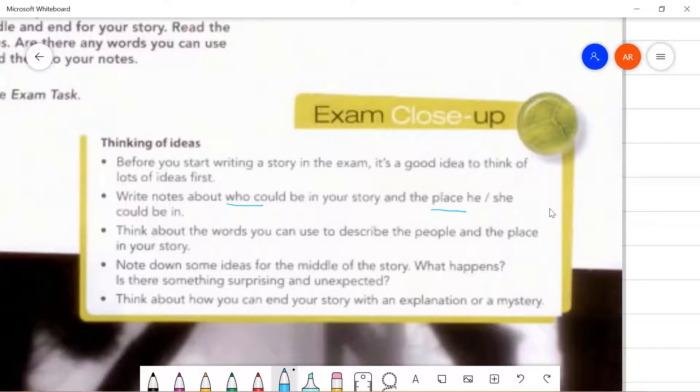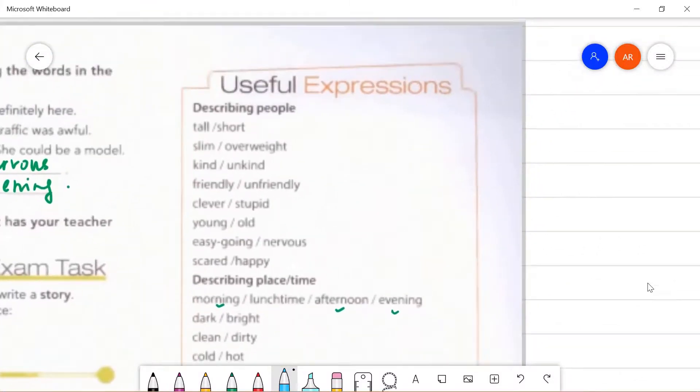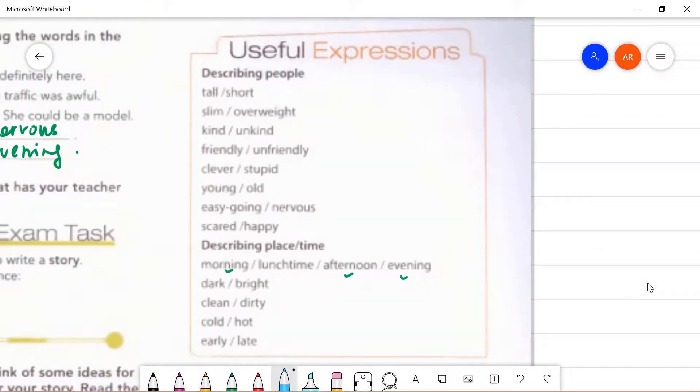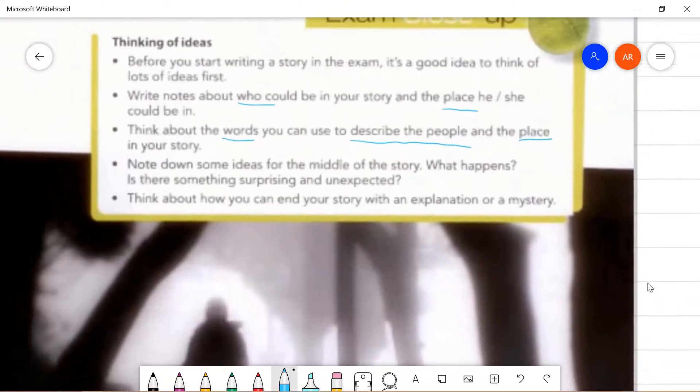Is it in a village area? Is it in a city? Up to you. Use your own creativity. Now let's look at the third one. Think about the words you can use to describe the people and the place in your story. Words to describe people and the place. These are the words that you can use. Remember we did this? We talked about this yesterday. Words to describe people and words to describe place or time. Use these words to help you describe the element in your story.